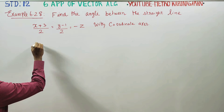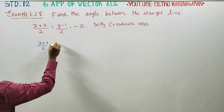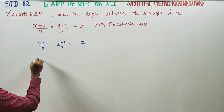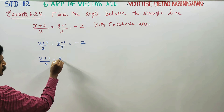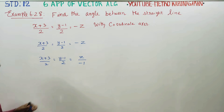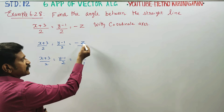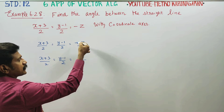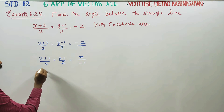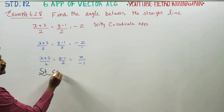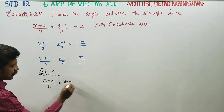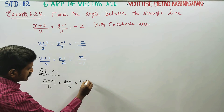In the straight line, we will get to know that x plus 3 by 2 is equal to y minus 1 by 2 is equal to minus z. The standard form is x minus x1 by b1 is equal to y minus y1 by b2 is equal to z minus z1 by b3.